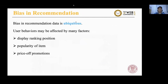Now let's look at the user-item interactions in recommendation systems. Existing recommendation systems usually assume users click items due to their preferences. However, bias in recommendation data is ubiquitous. There always exist unobserved confoundings in real-world data. For example, user behaviors may be affected by display ranking position, popularity of item, price, or promotions.